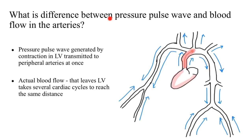What is the difference between the pressure pulse wave and the blood flow in the arteries? The pressure pulse wave is generated by the contraction of the left ventricle and is transmitted to the peripheral arteries very quickly. The one depicted in blue arrows is the pressure pulse wave — it goes so fast that it even gets reflected from the peripheral arterioles. The actual blood flow in the arteries, which is the blood that leaves the left ventricle, takes several cardiac cycles to reach the same distance. So this blood flow lags behind the pressure pulse wave, which goes much faster.